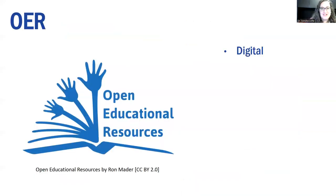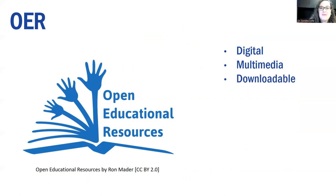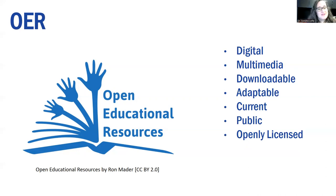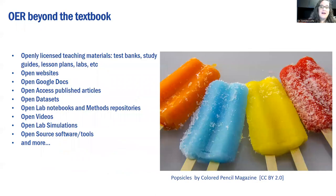OER — open education resources — are often digital, with digital access. They often contain multimedia pieces, they're downloadable, and they're adaptable — you can make changes to them. They should be current. If you find an OER you like and want to adapt it, we talked about how you'd go about publishing that to a place like OER Commons, getting a citation and attribution. OER is public, available to anyone who can access it because it's openly licensed and free.